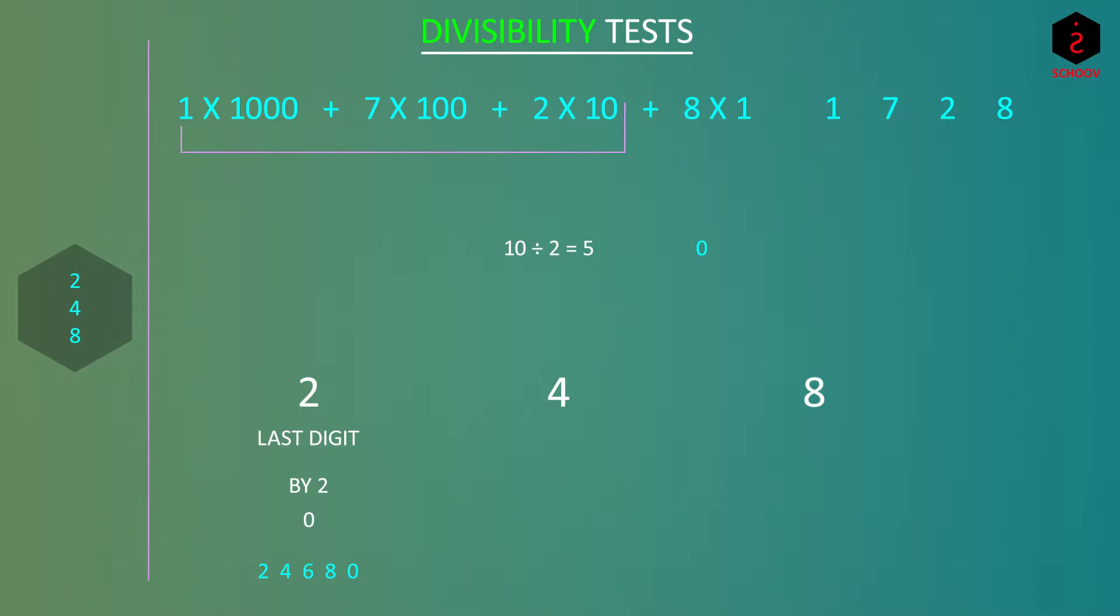Now 4. Since 100 is divided by 4, the first two terms are divisible by 4. So we have to check the last two terms. 2 x 10 plus 8 x 1 is 28, which is divisible by 4. So if the last two digits of a number are divisible by 4, the number is divisible by 4. Any number having last two digits as 00 will also be completely divided by 4.